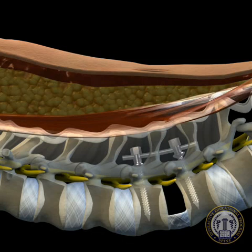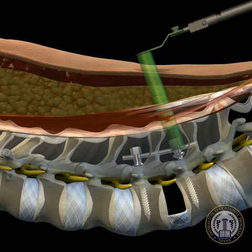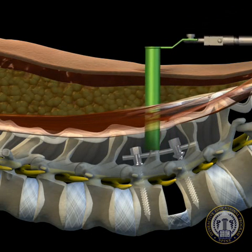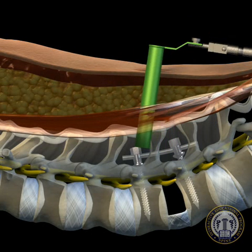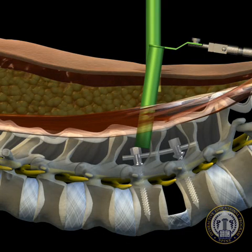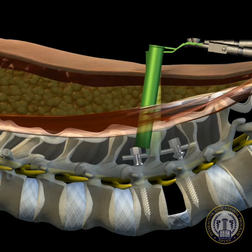If there is concern about contralateral neural element compression, then a direct decompression can be obtained by repositioning and wanding the ipsilateral tubular retractor, or by placing a second tubular retractor through the contralateral incision.